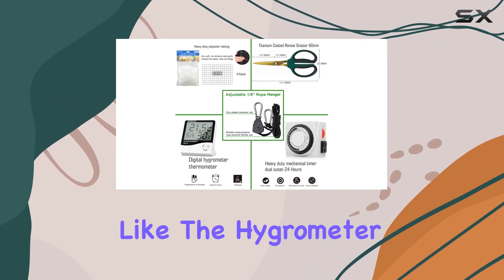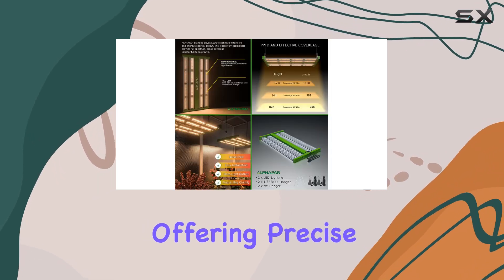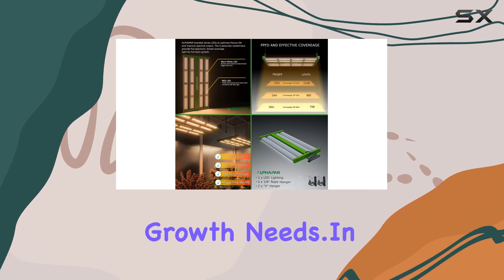Additional accessories like the hygrometer, timer, shears, and trellis netting complete the package, offering precise environmental control and support for your plants' growth needs.